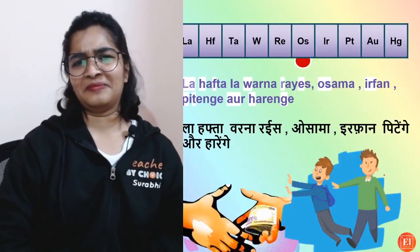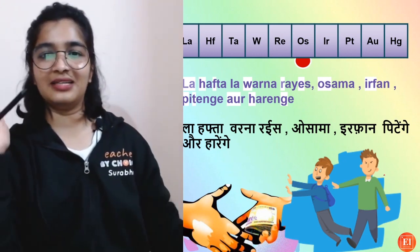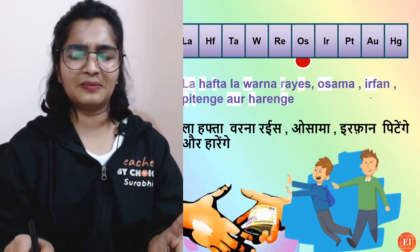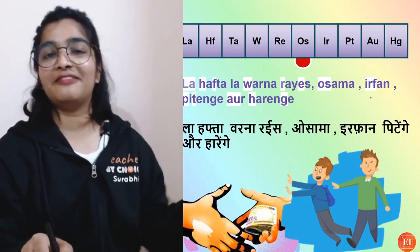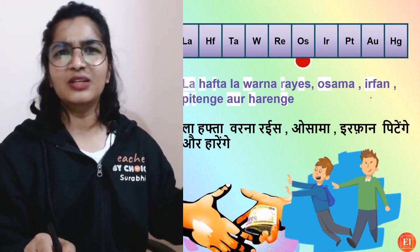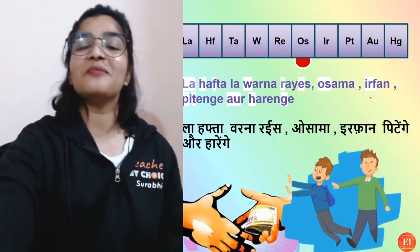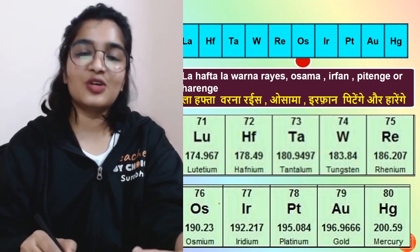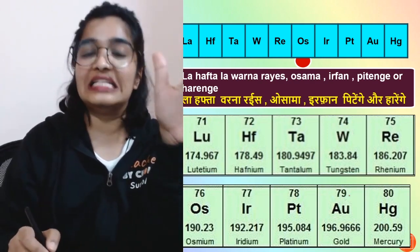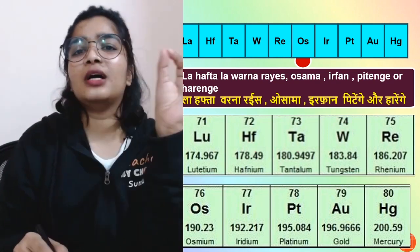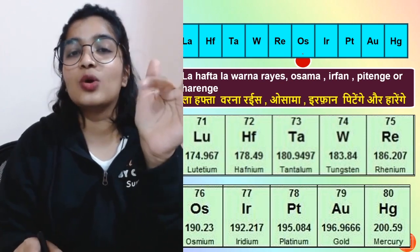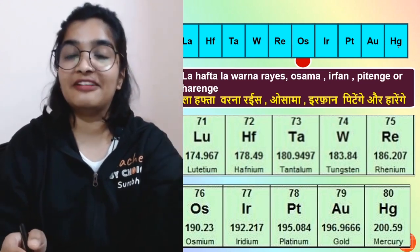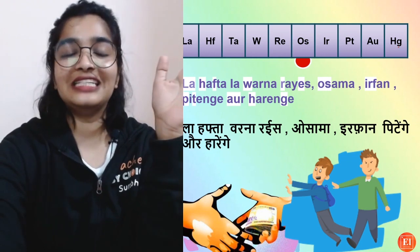And the last one: 'La hafta la varna Rais Usama Irfan Peetenge or harenge.' I know Usama, but I have no idea who Rais and Irfan are — let me know in the comments! 'Peetenge or harenge' — they will lose. But for us the mnemonic is what matters. So: Lu is Lutetium, Hf is Hafnium, Ta is Tantalum, W is Tungsten, Re is Rhenium, Os is Osmium, Ir is Iridium, Pt is Platinum, Au is Gold, Hg is Mercury. That is the 5D series, and the mnemonic is 'La hafta la varna Rais Usama Irfan Peetenge or harenge.'